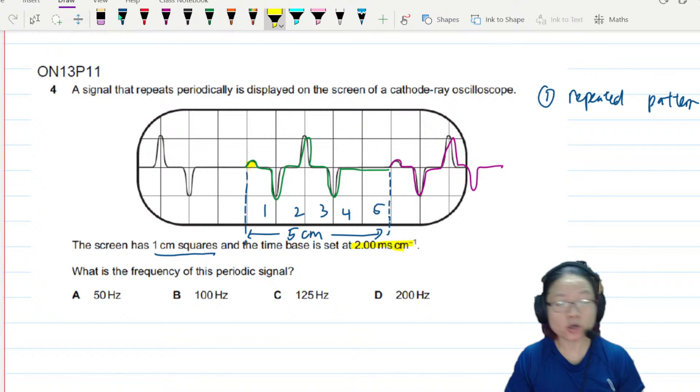That means one cm is 2 milliseconds, two cm is 4 milliseconds, so five cm is 10 milliseconds. Or you could do this: 2 milliseconds divided by cm, multiply by 5 cm. The cm cancels out.